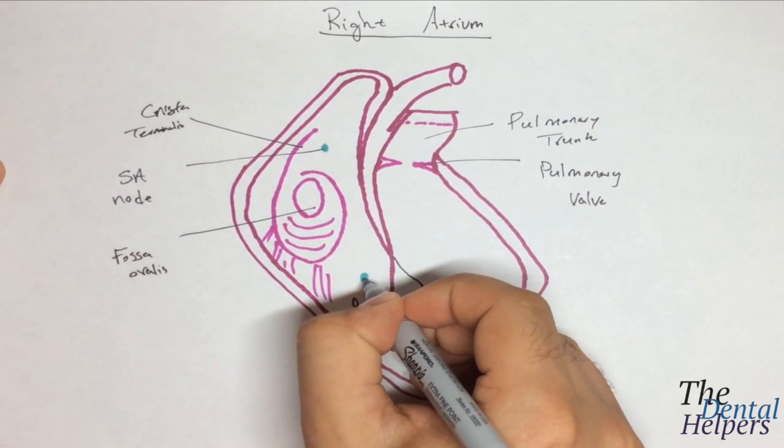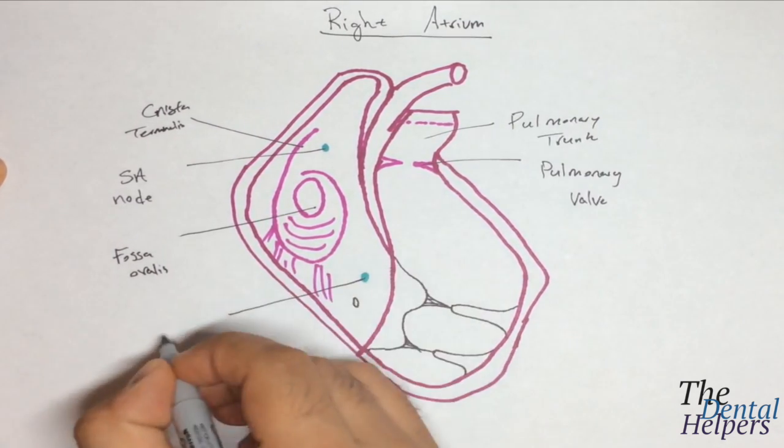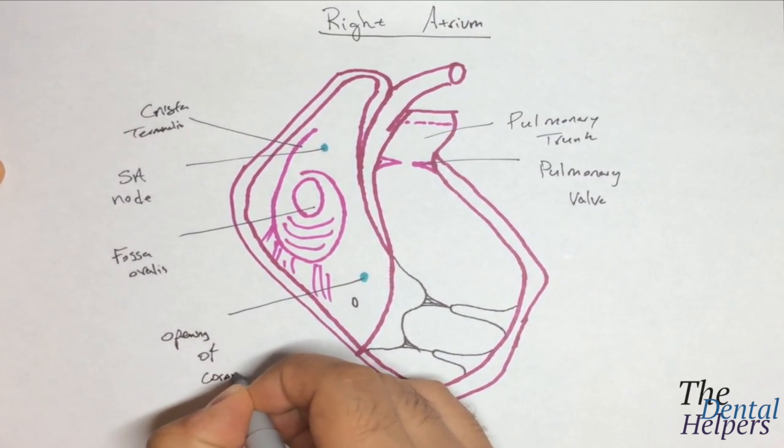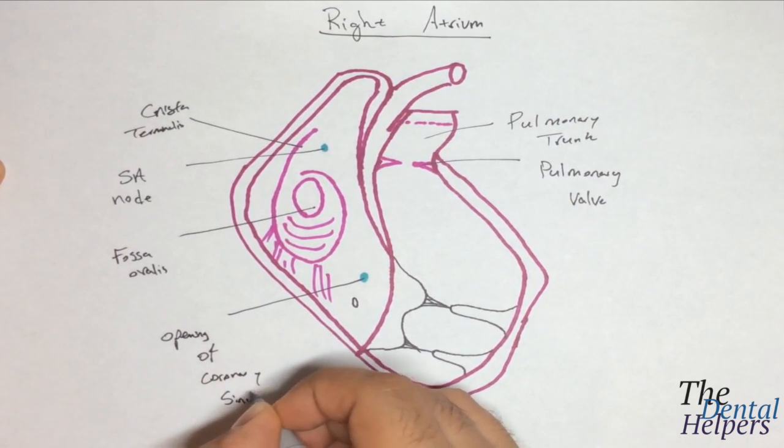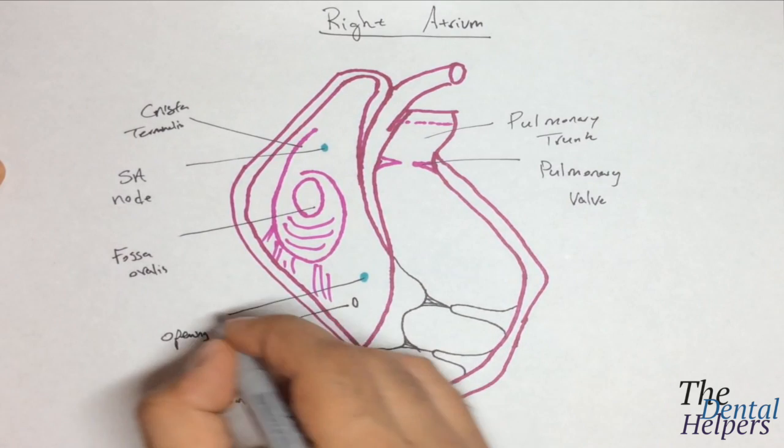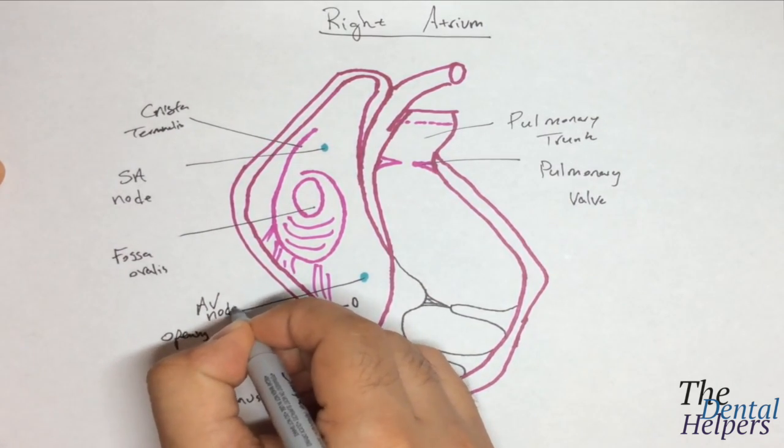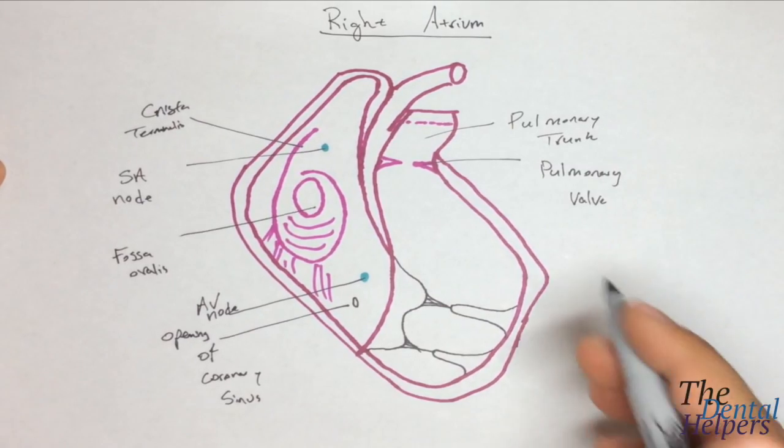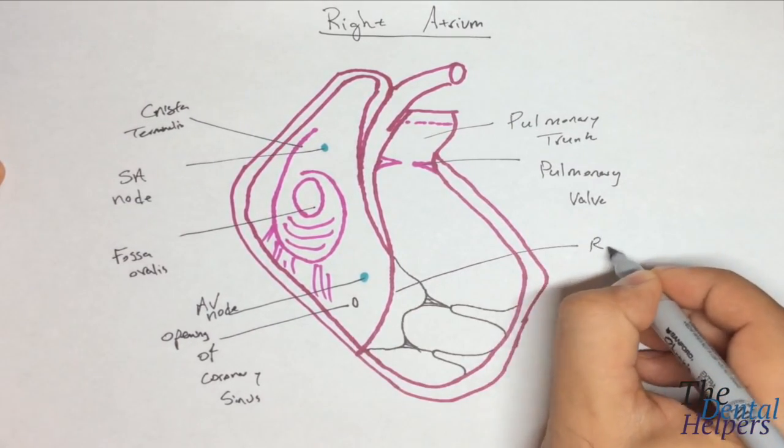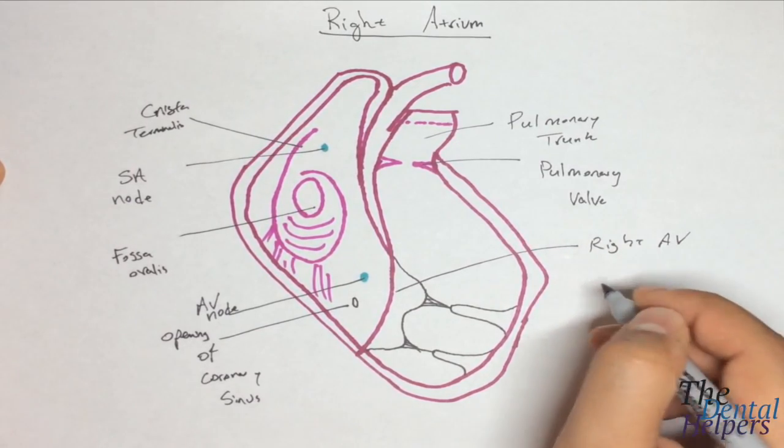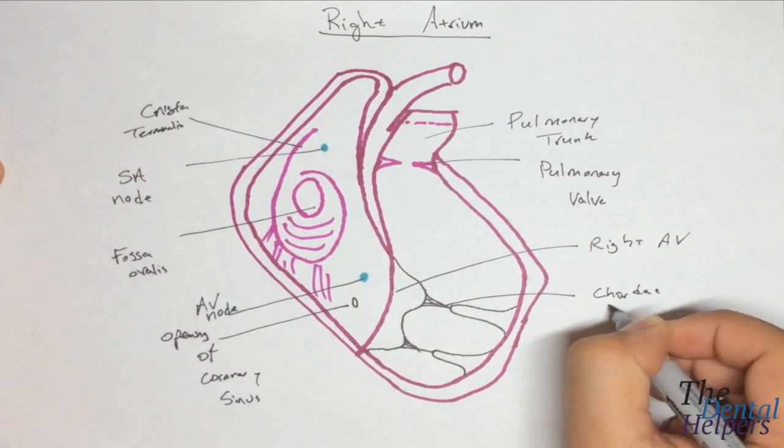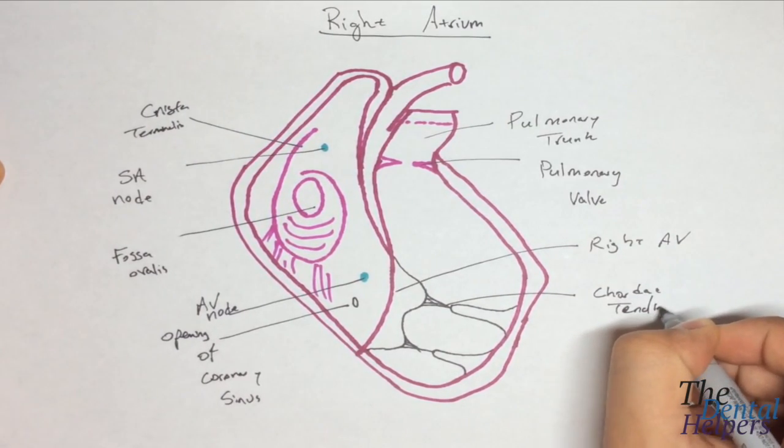And next we have what is the opening of the coronary sinus. Oh sorry, that's actually right here. The AV node is the one that's right above it. So this is the AV node, this is the coronary sinus, and right here is where the right AV is. These fibers right here are the chordae tendineae. These are the papillary muscles.